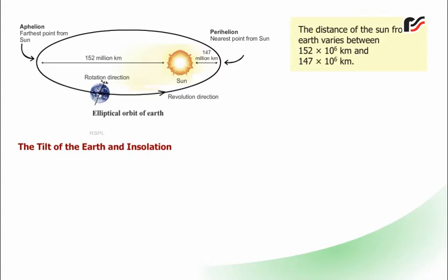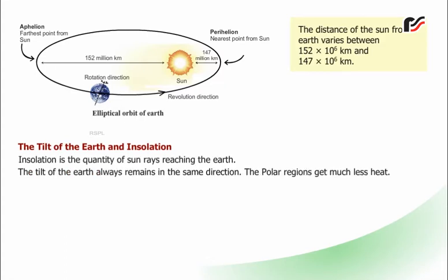The tilt of the Earth and insolation: insolation is the quantity of Sun rays reaching the Earth. The tilt of the Earth always remains in the same direction. The polar regions get much less heat.